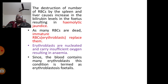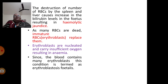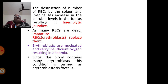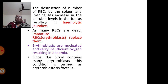The destruction of RBCs by the spleen and liver causes an increase in bilirubin pigment levels, and the fetus ends up in hemolytic jaundice. As many mature RBCs are dead, immature RBCs — that is, erythroblasts — replace them. These erythroblasts are nucleated, unlike erythrocytes, and therefore carry insufficient oxygen, resulting in anemia. Since the blood contains many erythroblasts, this condition is called erythroblastosis fetalis.